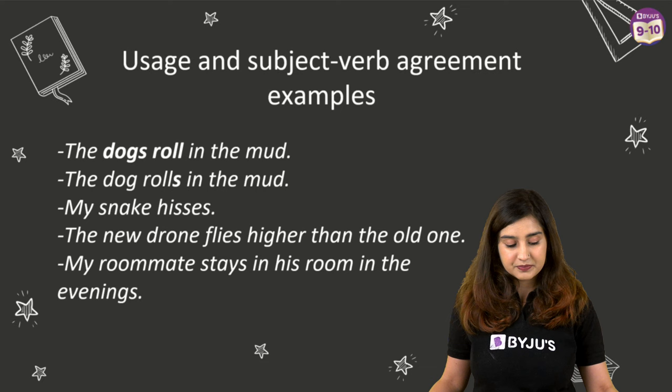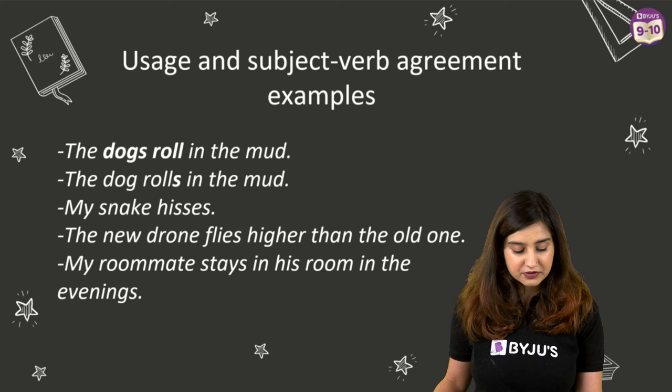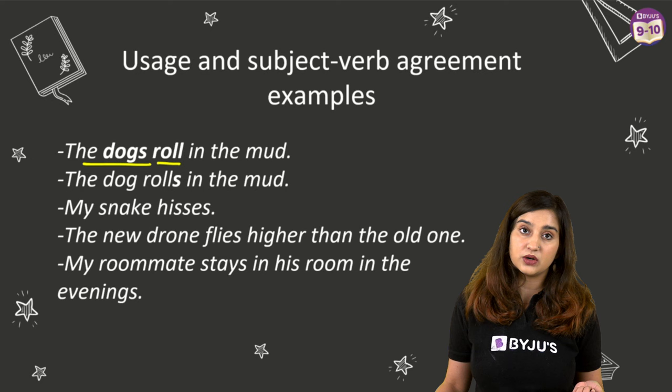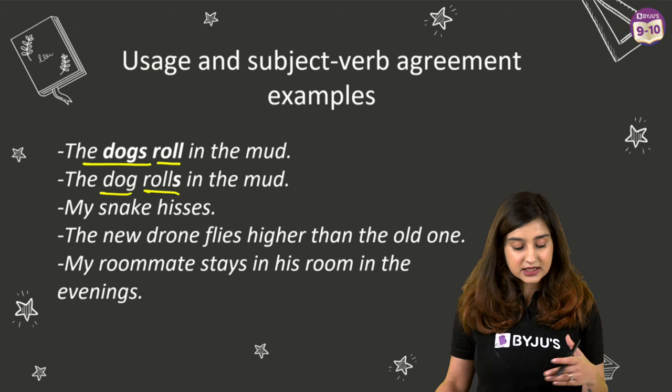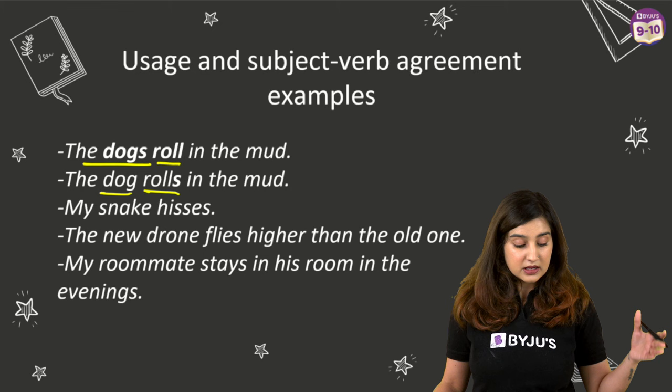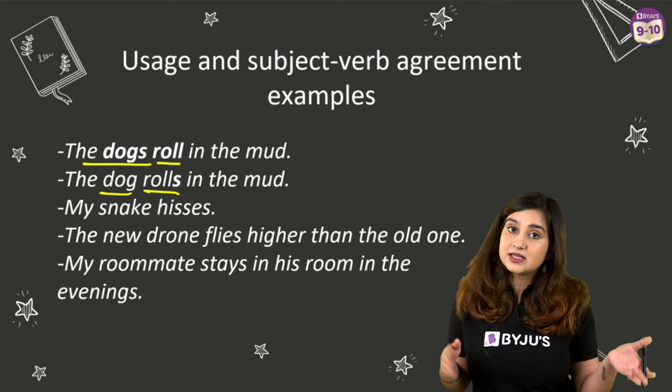Here are some examples of subject-verb agreement in use. 'The dogs roll in the mud' — plural. 'The dog rolls in the mud' — singular. 'The snake hisses'; 'the snakes hiss.' 'The new drone flies higher than the old one'; 'the new drones fly higher than the old ones.' 'My roommate stays in his room in the evenings'; 'my roommates stay in the room in the evenings.'